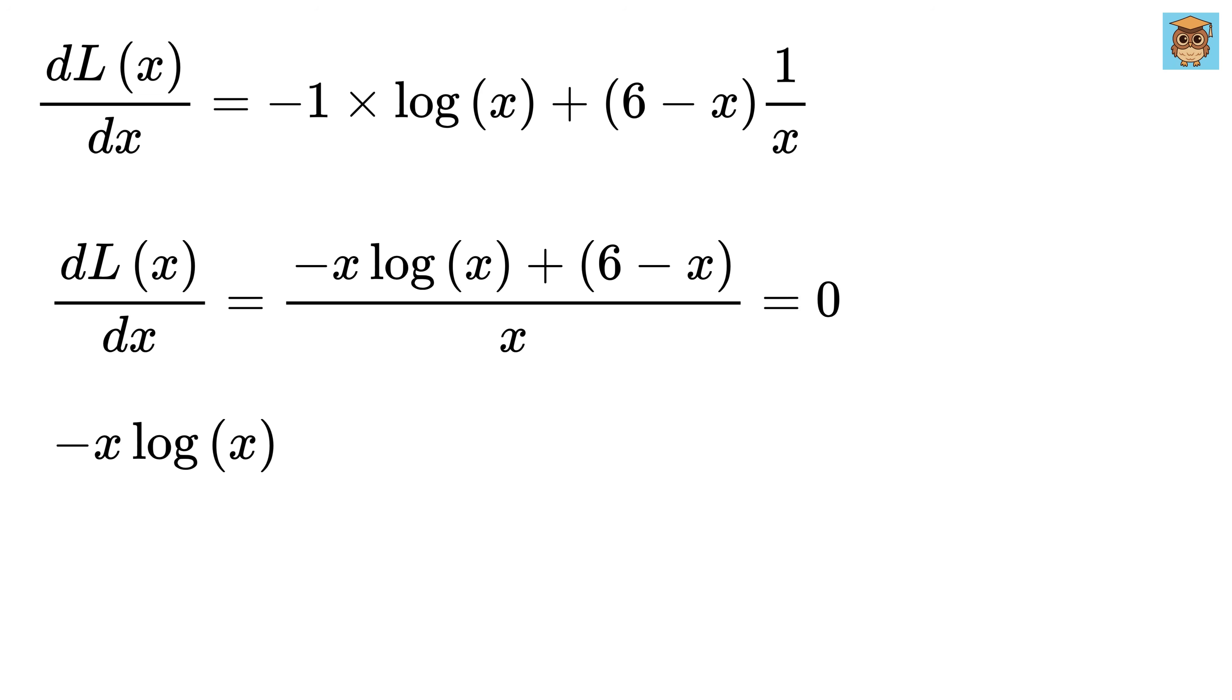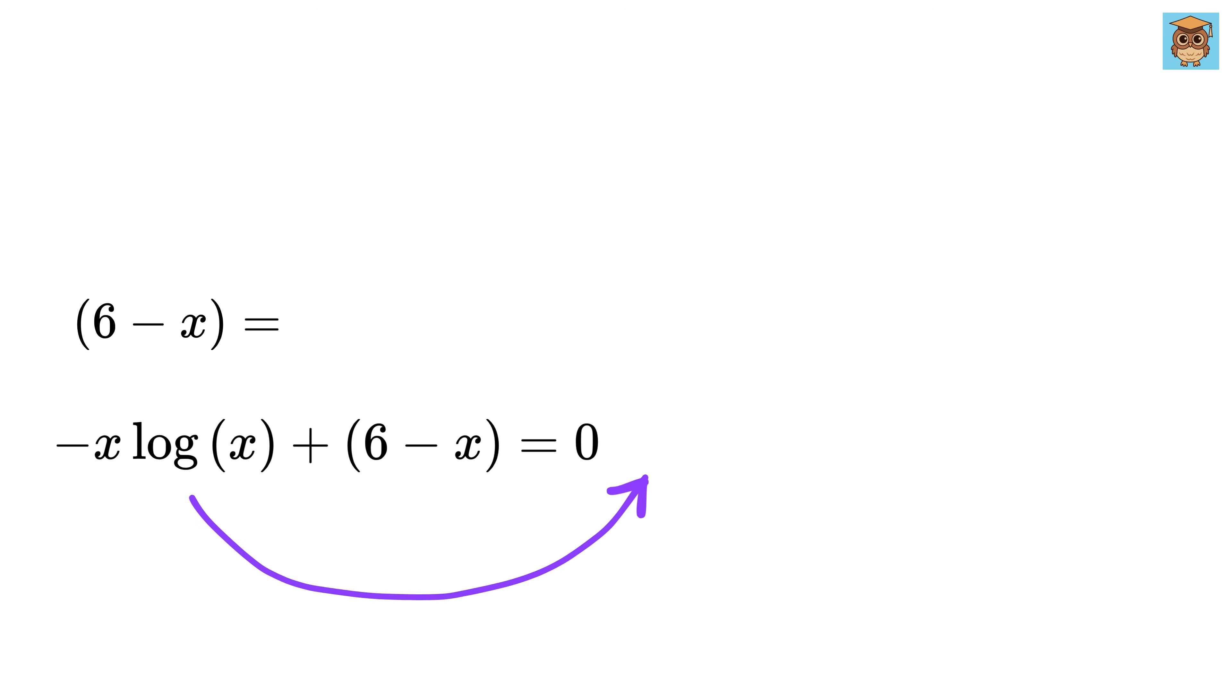This gives us minus x times log x plus 6 minus x equals 0. Take this to the right-hand side, which gives us 6 minus x equals x times log of x.